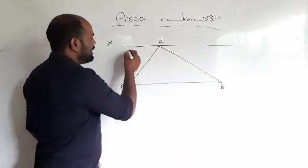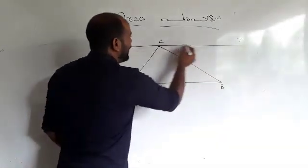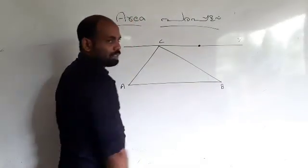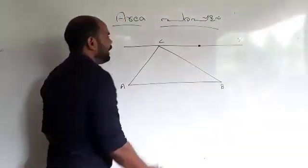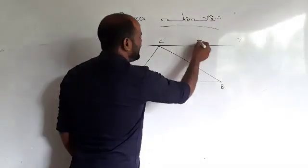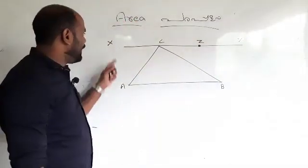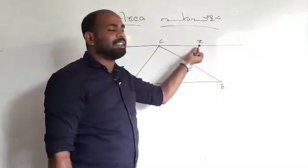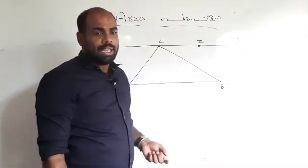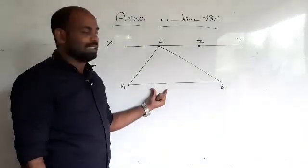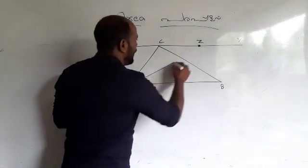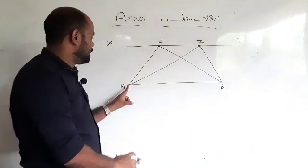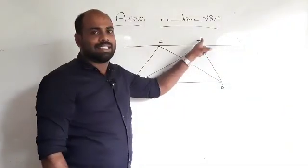What do we do? In this parallel line, everyone has a point. We have a point called Z. Then I have a line called XY and a point called Z. We have formed a different triangle. The name is A, B, Z.